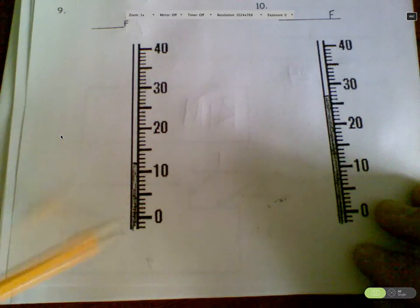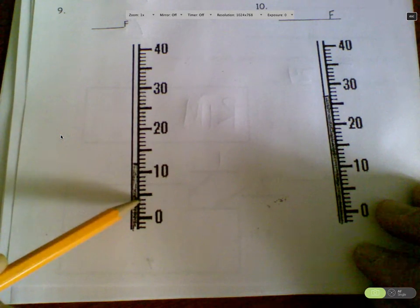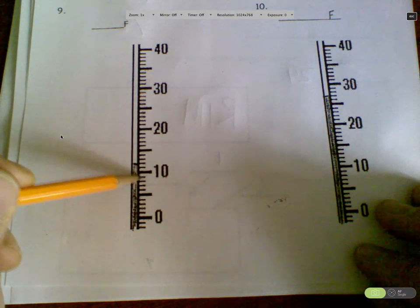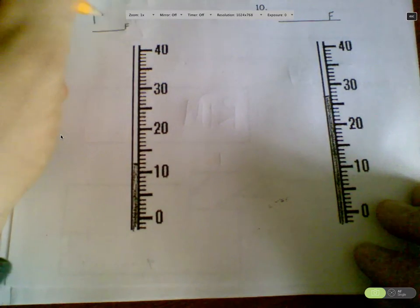This thermometer is counting by twos. Two, four. Oh, sorry. Two, four, six, eight. Oh no, it's not. It's counting by one. Sorry. One, two, three, four, five, six, seven, eight, nine, ten, eleven, twelve. Three degrees Fahrenheit.